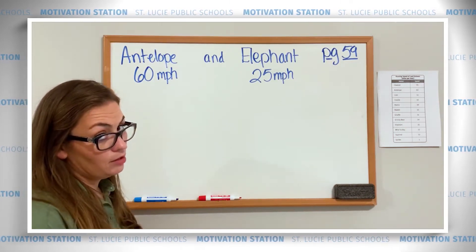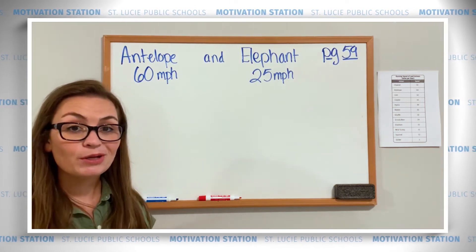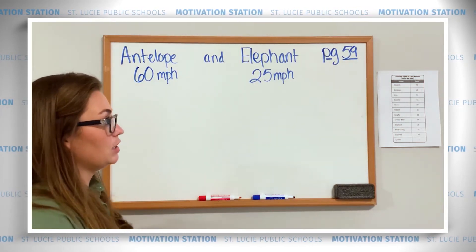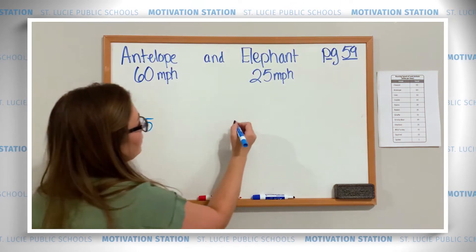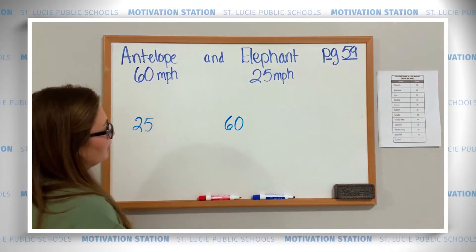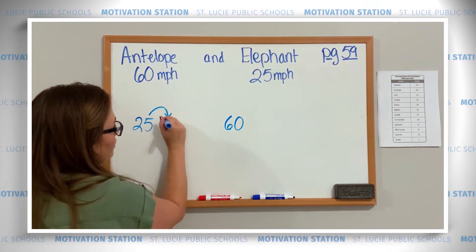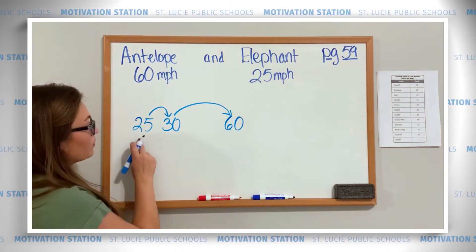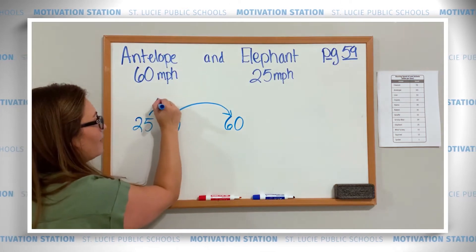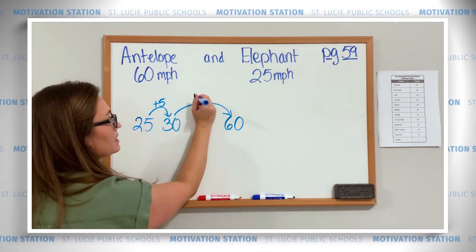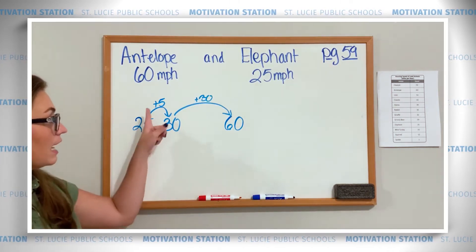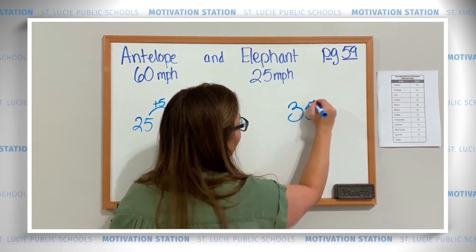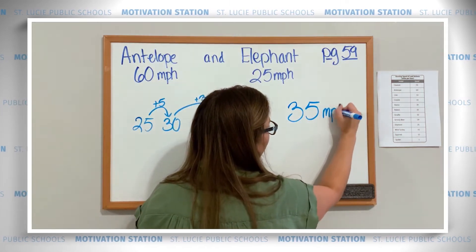You have a choice — you can solve this with addition or subtraction. I'm going to show both; you only need to write one. If I was going to show this with addition, I would start with my 25 and I know that I'm going to 60. My first jump would get to a close 10, like 30, and then a big jump all the way to 60. 25 to 30 is plus 5, and 30 to 60 is plus 30. Together, 5 and 30 make 35 — so the difference between the elephant and the antelope is 35 miles per hour.